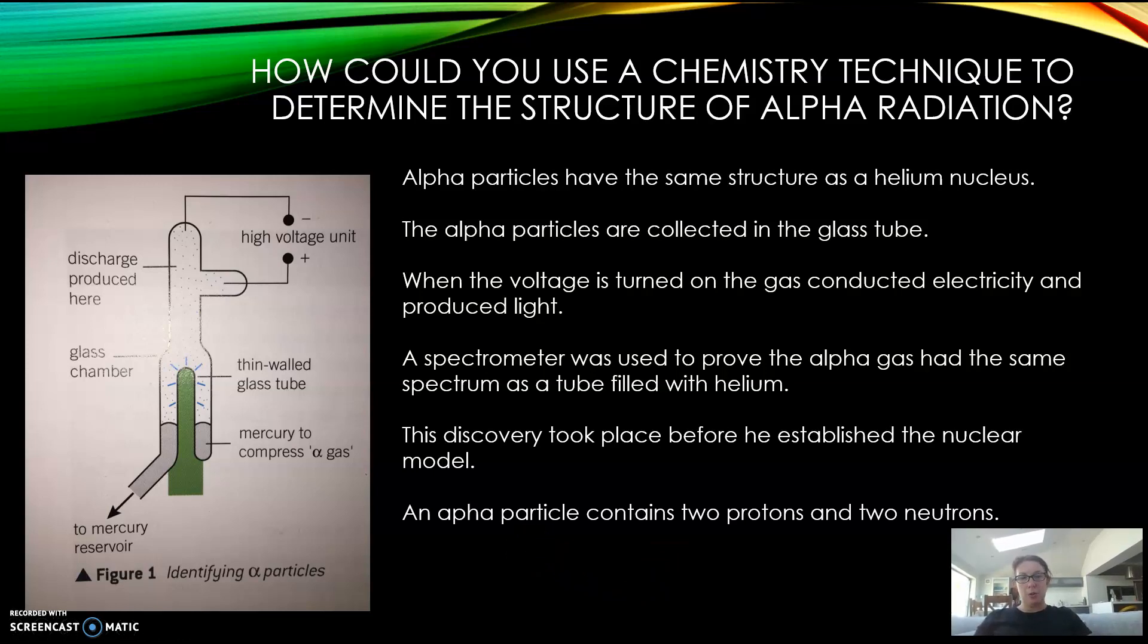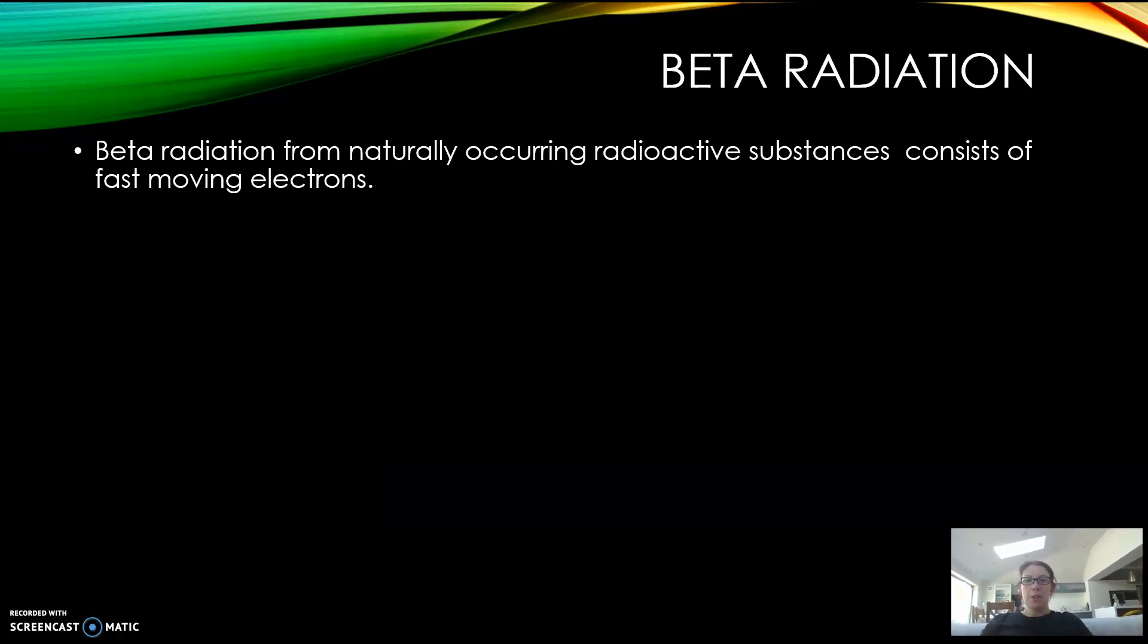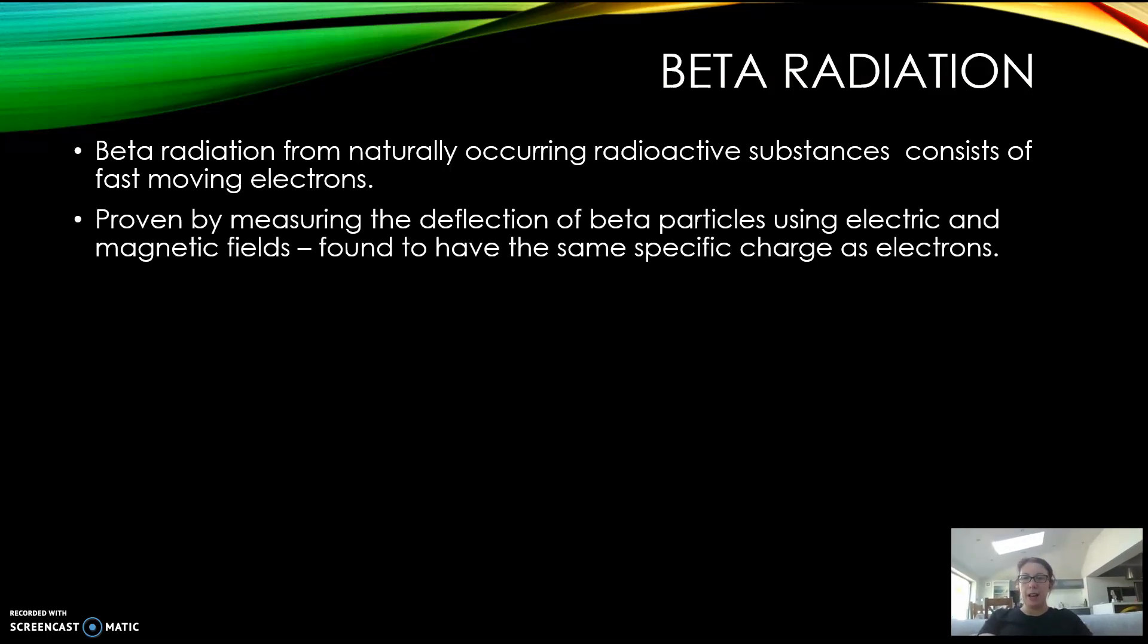Beta radiation from naturally occurring radioactive substances consists of fast-moving electrons. They were proven by measuring deflection of beta particles using electric and magnetic fields, and were found to have the same specific charge as electrons.